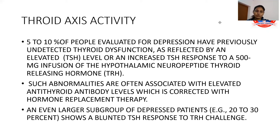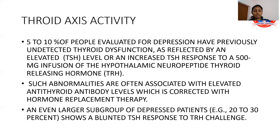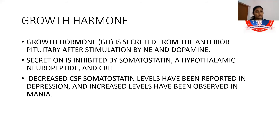Thyroid axis activity: 5 to 10% of people evaluated for depression have previously undetected thyroid dysfunction, as reflected by an elevated TSH level or an increased TSH response to a 500-microgram infusion of the hypothalamic neuropeptide thyrotropin-releasing hormone. Such abnormalities are often associated with elevated antithyroid antibody levels, which are corrected with hormone replacement therapy. A larger subgroup of depressed patients show a blunted response to TRH challenge.